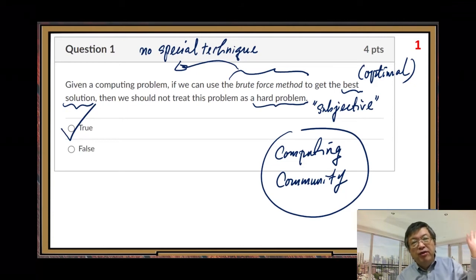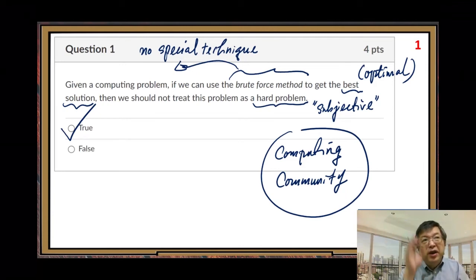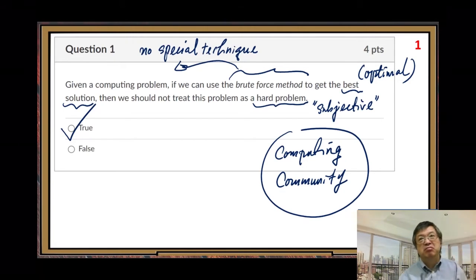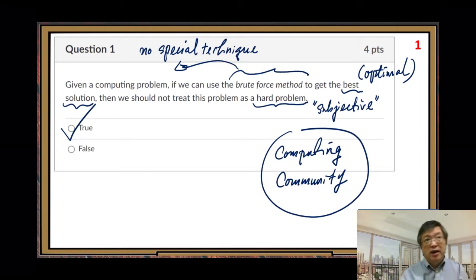Another thing: the brute force method should exhaust all the inputs — exhaust all the possibilities. That's another property of it. Because if you do not exhaust all the input cases, that means you skip some of the input cases. How can you skip some input cases? You have to use some special technique to skip. Otherwise you have no reason to skip. So from that point of view, you are doing something special.